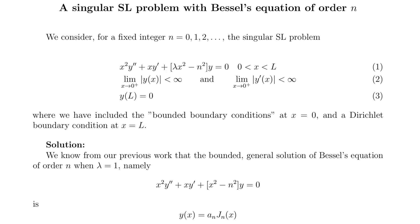We know from our previous work that the bounded general solution of Bessel's equation of order n when lambda equals 1 is in fact y sub n, a multiple of j sub n of x.